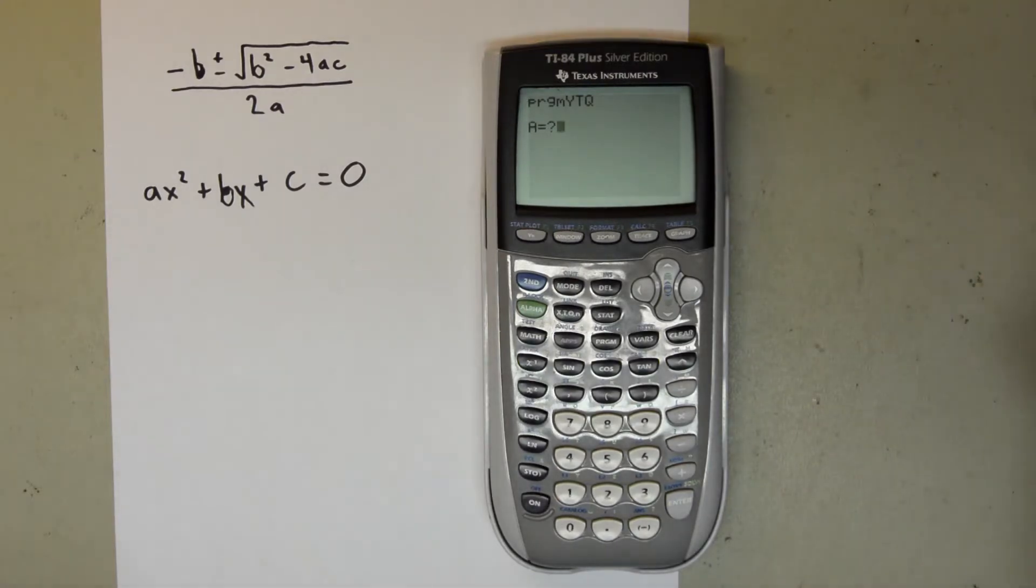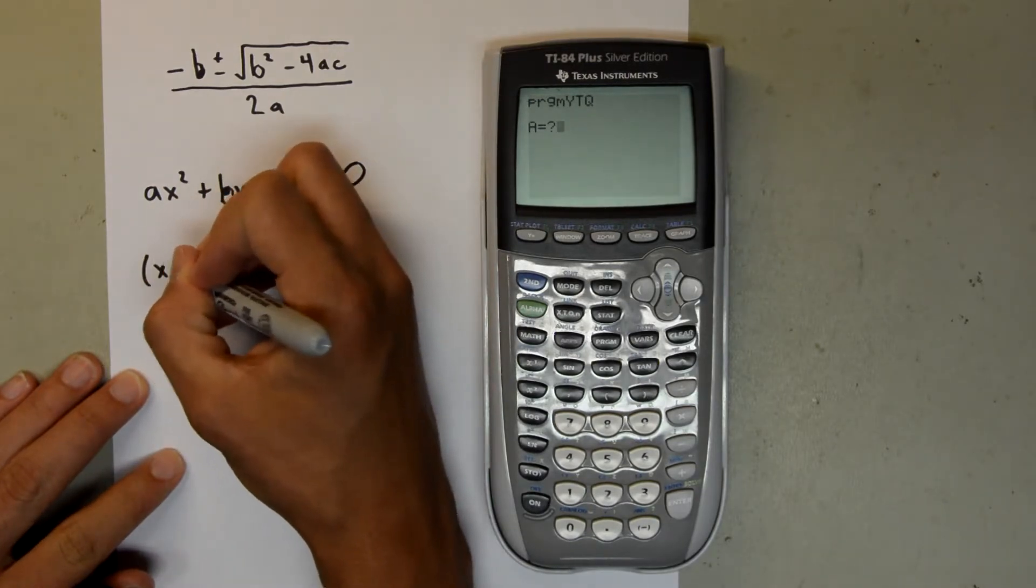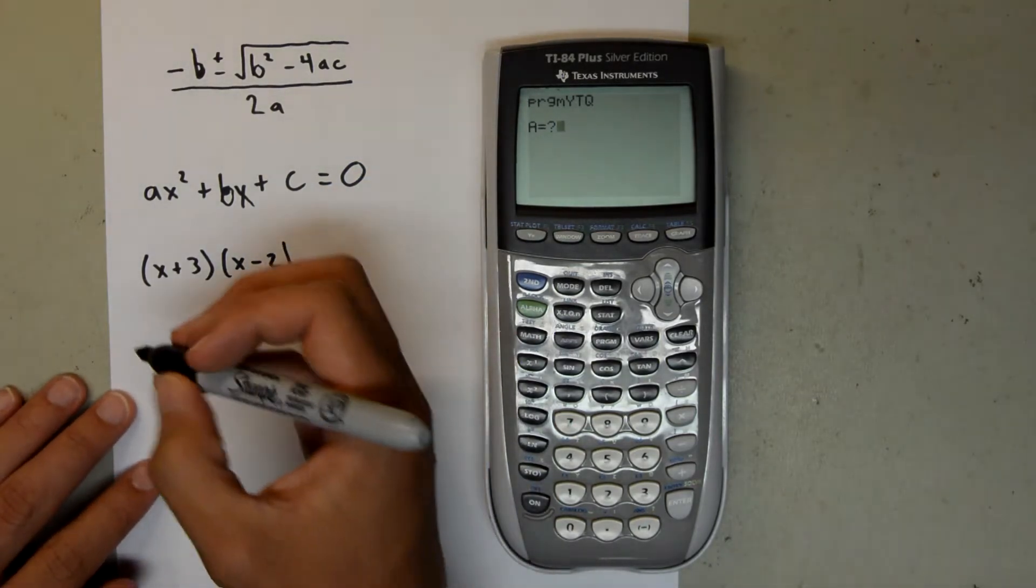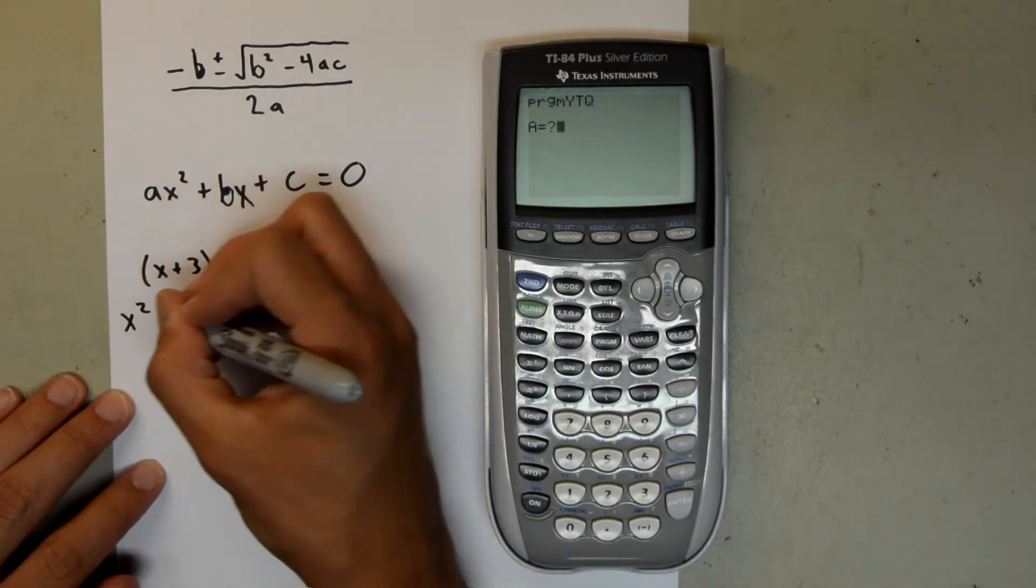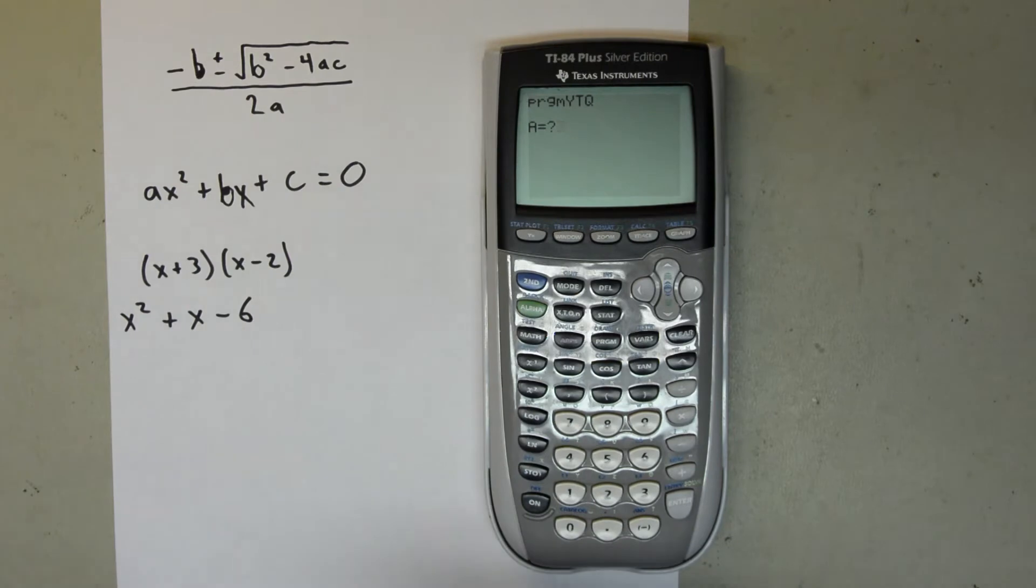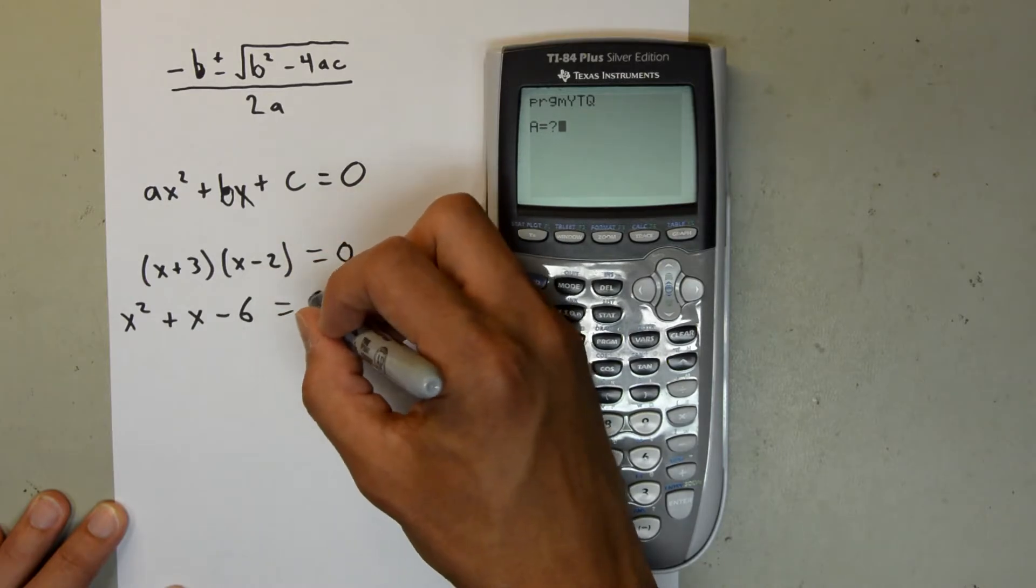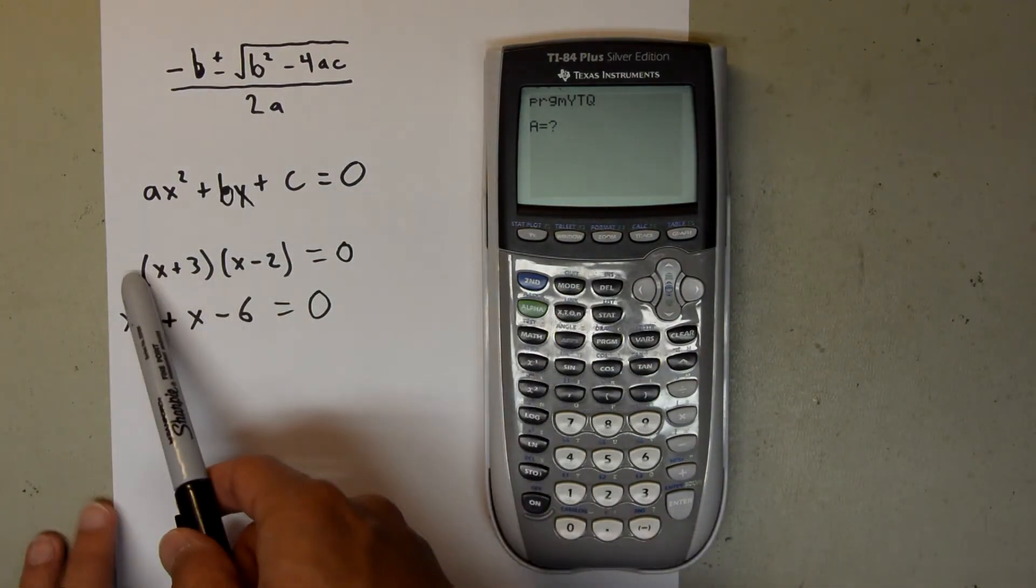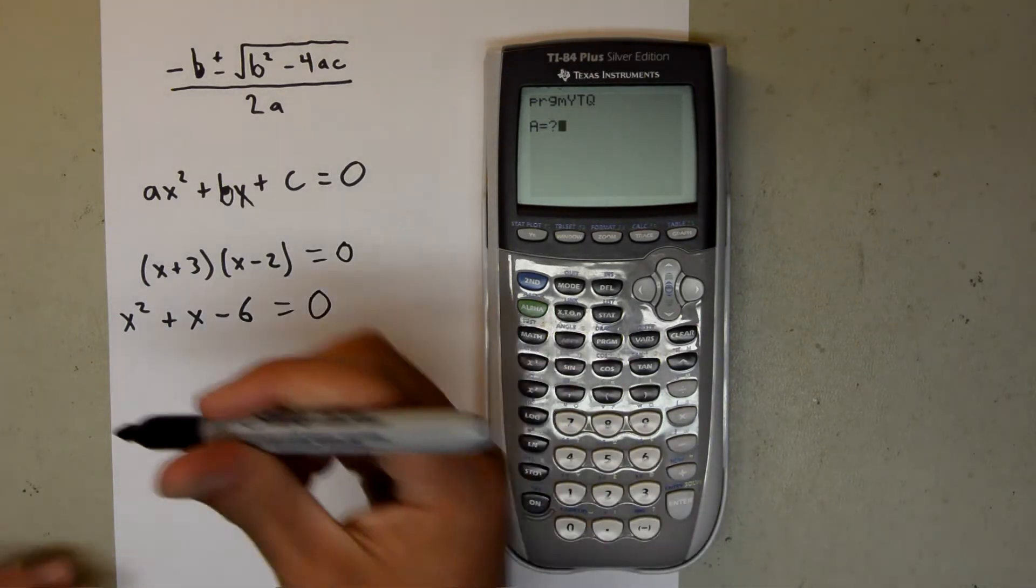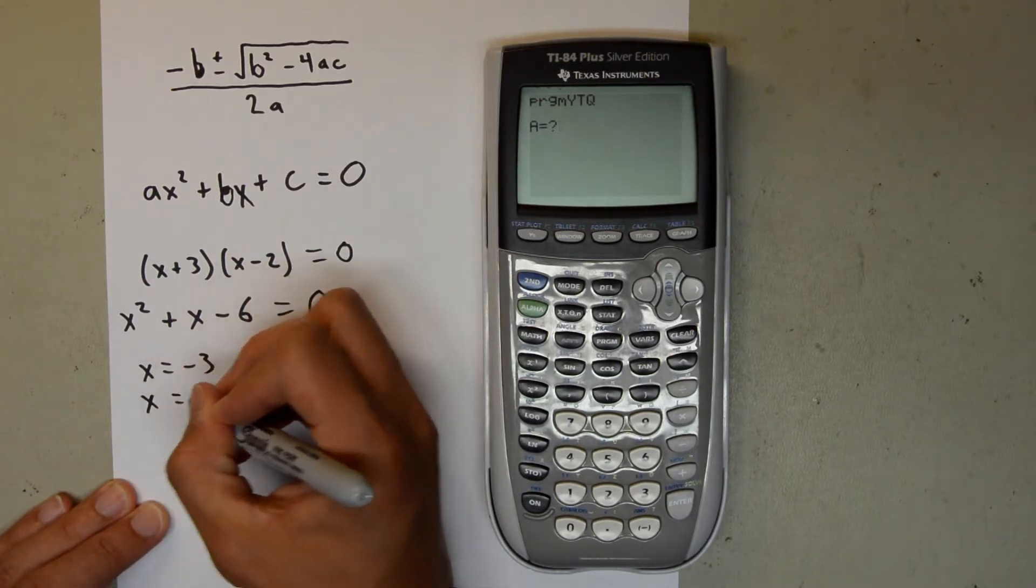And now it's going to ask for an A value. So let's just use two binomials. We'll say X plus 3 and X minus 2. And if you multiply those together, we will get X squared plus X minus 6 equals 0. So if you multiply those two binomials together and set it equal to 0, we know that our roots are going to be X equals negative 3, and X equals 2.